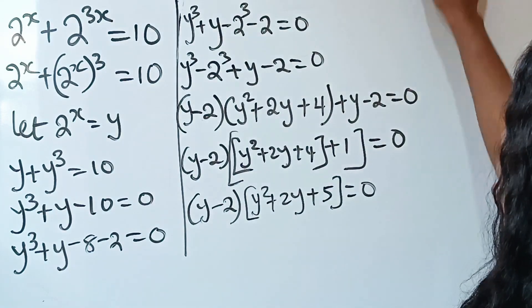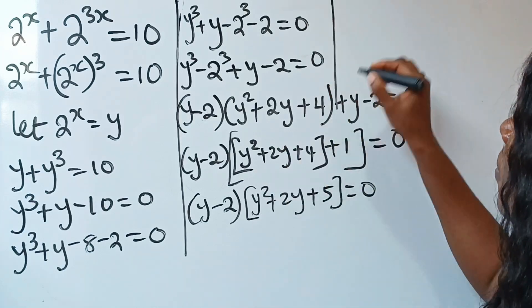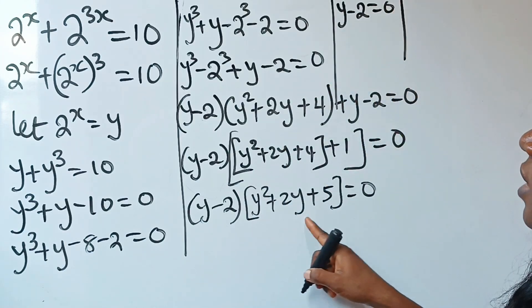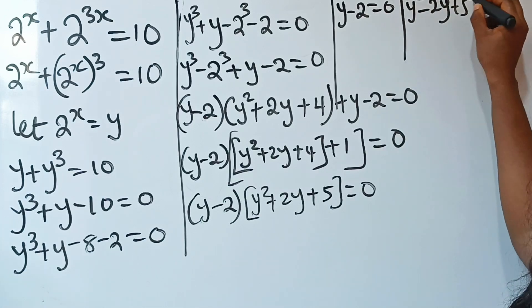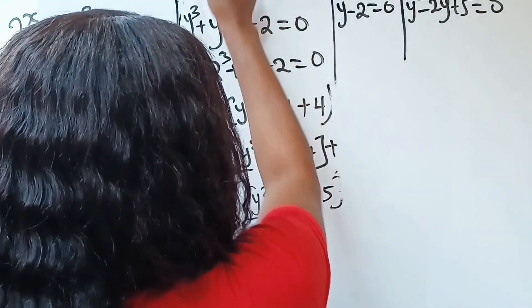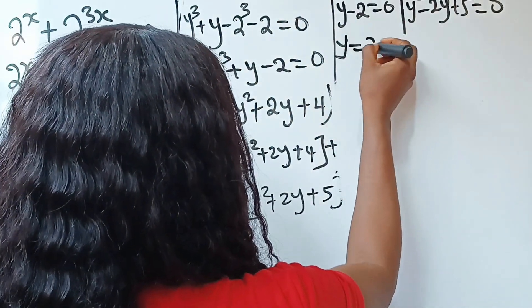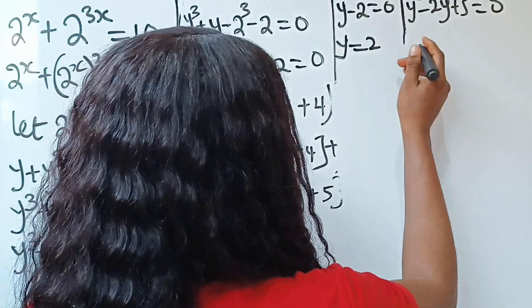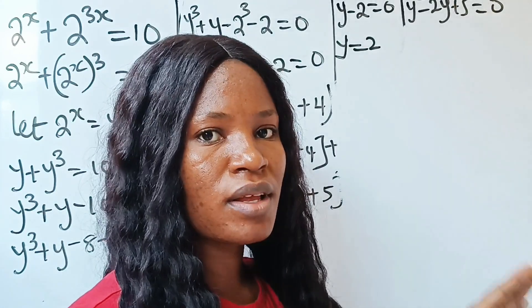From here we now have two equations. The first is y minus 2 equals 0, and the second is y squared plus 2y plus 5 equals 0. Solving the first equation: y is equal to 2. For the right-hand side, we cannot solve by factorization.